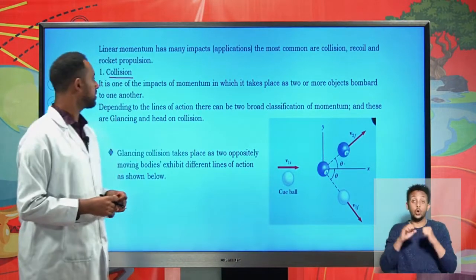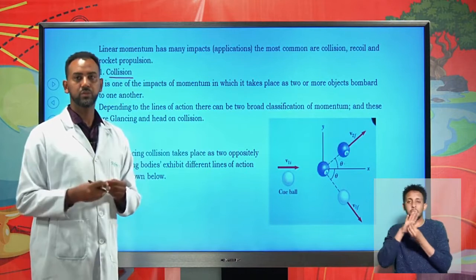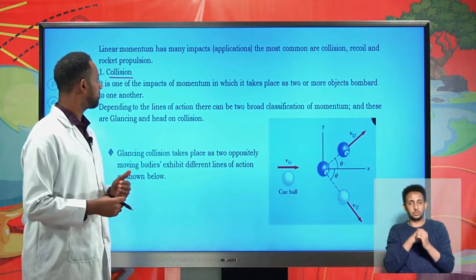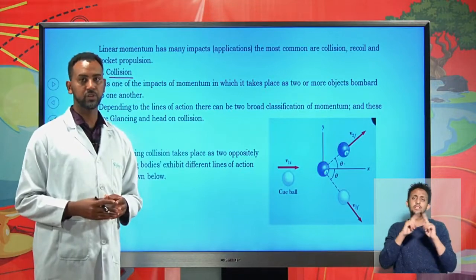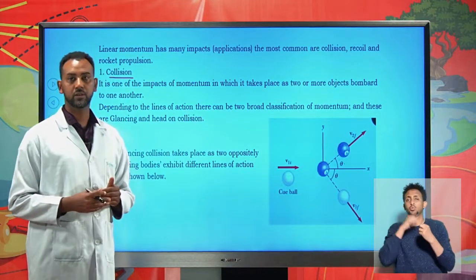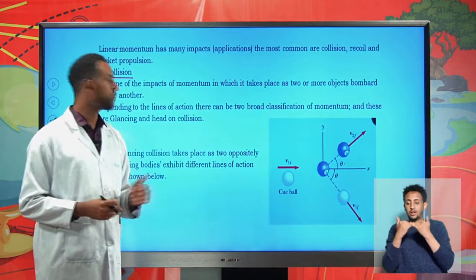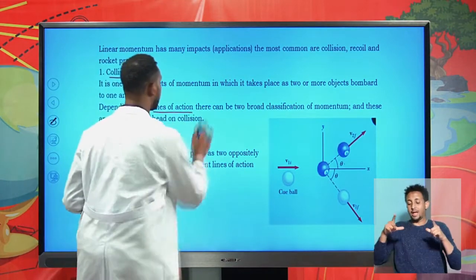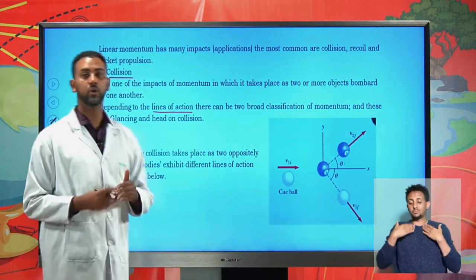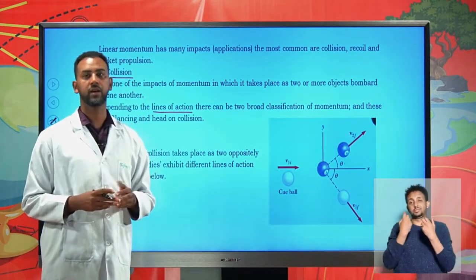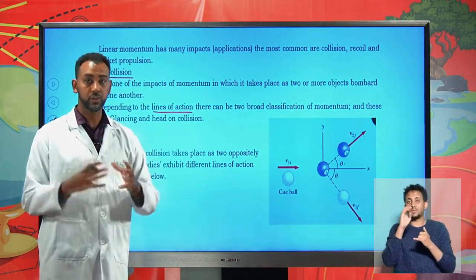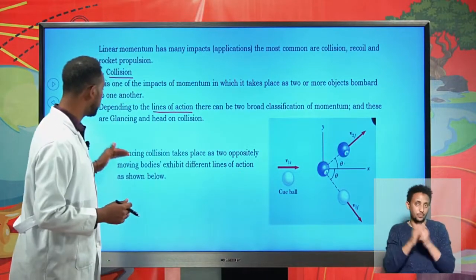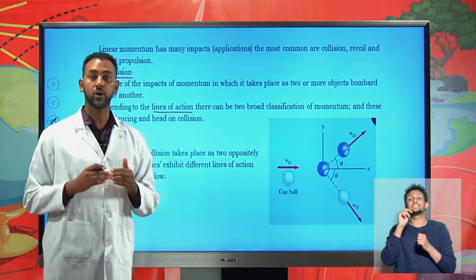Collision is the impact between two or more objects, and it has different types. We should have criteria to classify collision. Depending on the lines of action where those bodies are colliding, it is possible to classify collision into two: glancing collision and head-on collision.